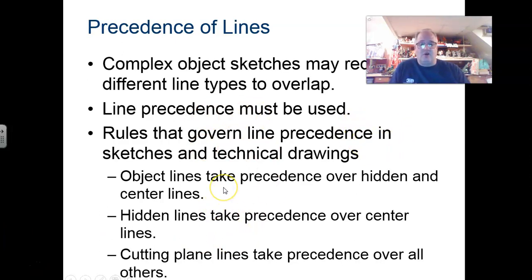Object lines usually are going to take precedence over just about any other line type. There is one exception. But the object lines are going to take precedence over hidden and center lines. Your hidden lines will take precedence over center lines. And the cutting plane line. If you do have a cutting plane, we'll talk more about those as we go. That will take precedence over all of your other line types as well. But for the most part, in this class, you're going to be using the object lines, hidden lines, and center lines. And you need to know that hierarchy, that precedence, is object lines, then hidden lines, and then center lines.